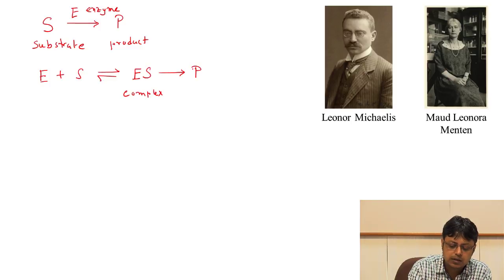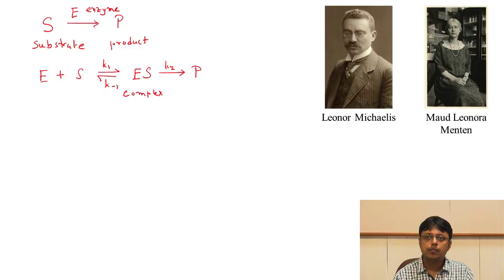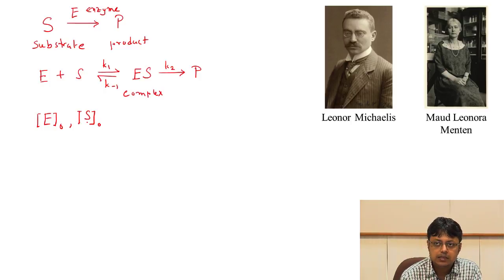That complex gives rise to the product. We can think about two rate constants k1 and k-1, and k2 for the rate of product formation. We will also consider the steady-state approximation for the enzyme-substrate complex. What Michaelis and Menten came up with is cleverly manipulating the amounts of enzyme and substrate, because you cannot measure them directly. What you can measure is the initial enzyme concentration E0 and the initial substrate concentration S0.